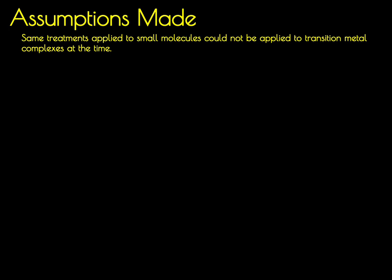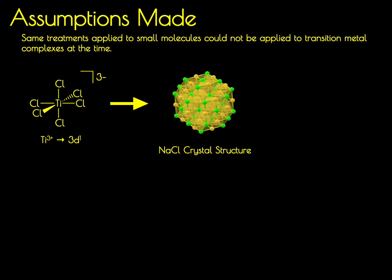To understand this approximation, we're first going to consider the molecule titanium hexachloride. Titanium hexachloride contains a formal titanium 3+ ion which contains one d valence electron. The titanium center in this molecule is surrounded by six chloride ions in an octahedral geometry. This is therefore similar to the sodium ion in the sodium chloride structure, which contains a sodium ion surrounded by six different chloride ions. The bonding in sodium chloride was known at the time to be largely ionic in nature.